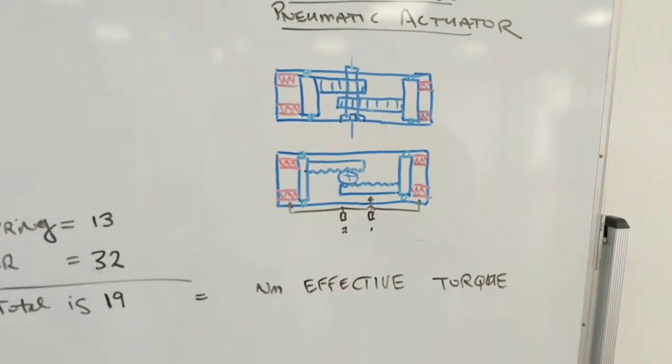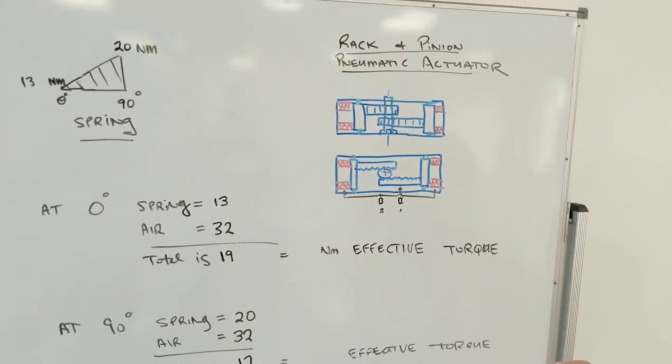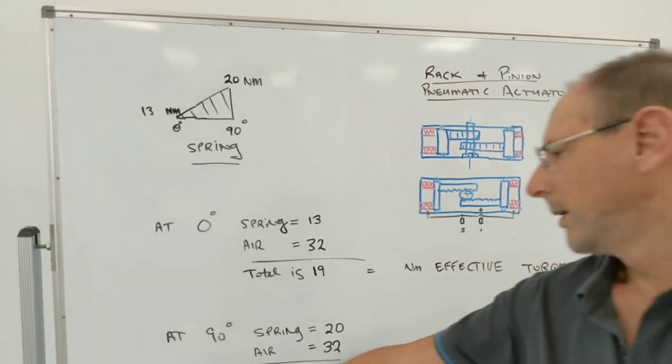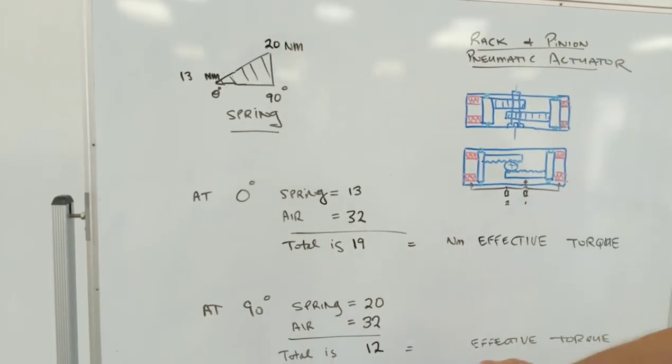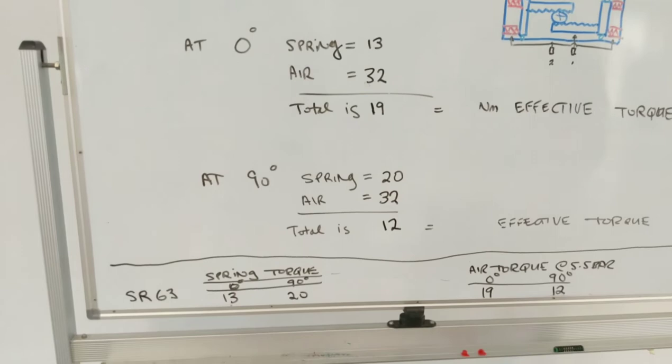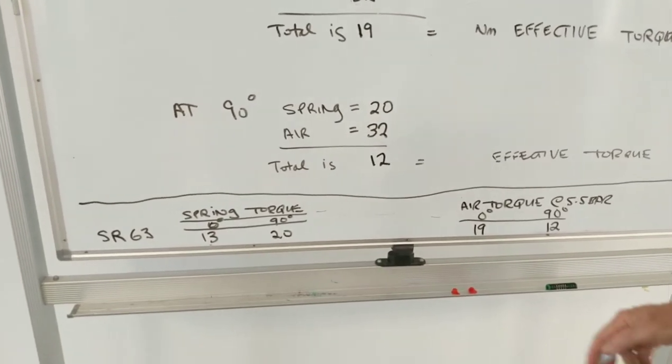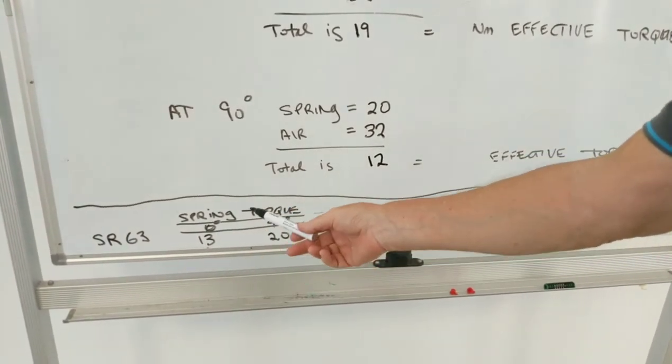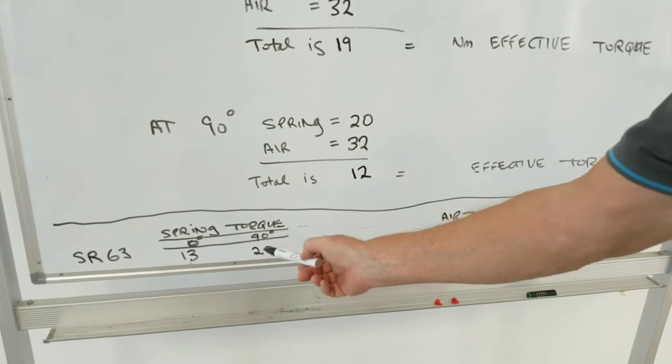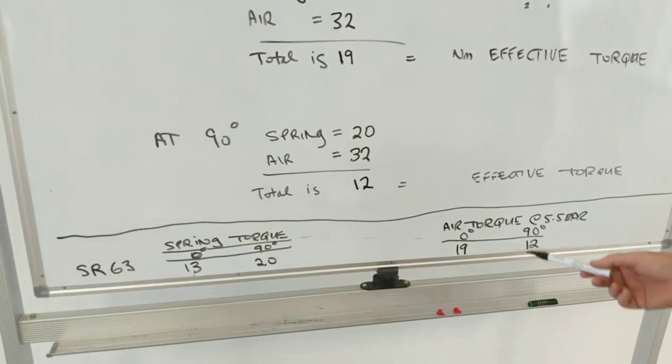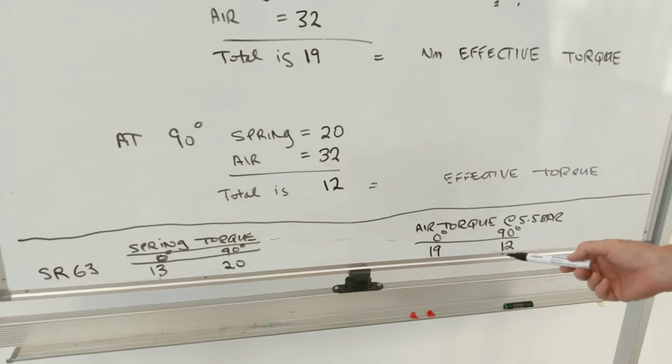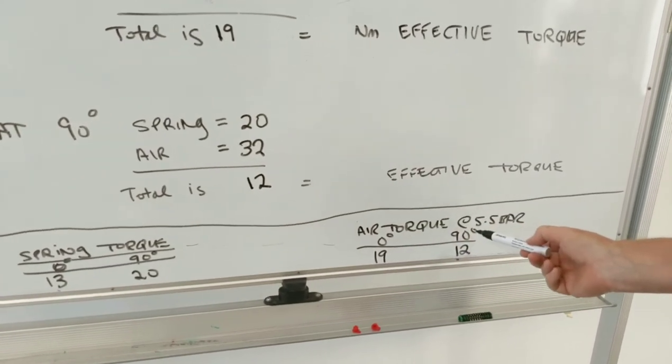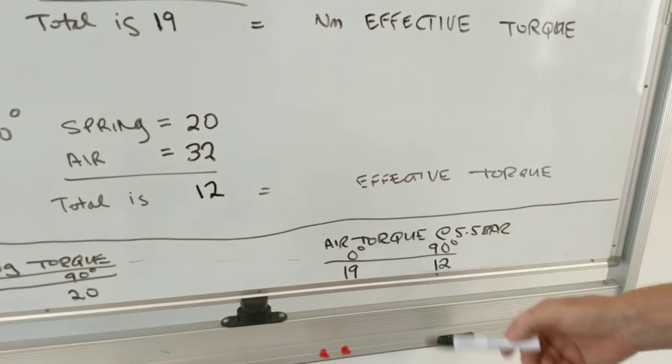Now the trick with rack and pinion actuators is to size it because if you look at our torque tables for our pneumatic actuators, you'll see the model and spring torque at 0 and 90 degrees. A couple examples, 13 and 20, and the air torque at 5.5 bar at 0 and 90 degrees which in this case is 19 and 12.